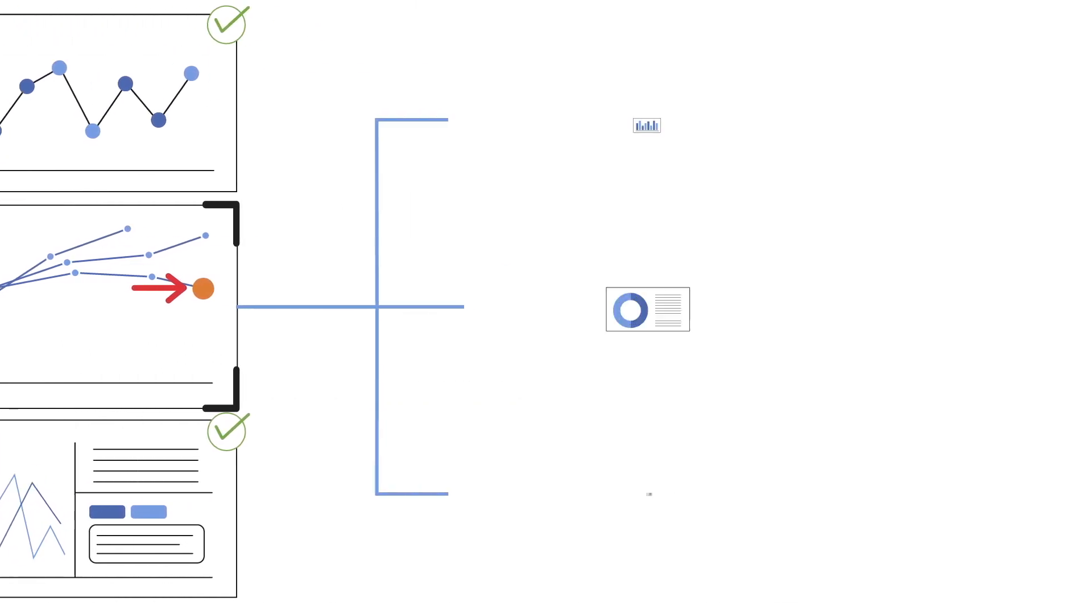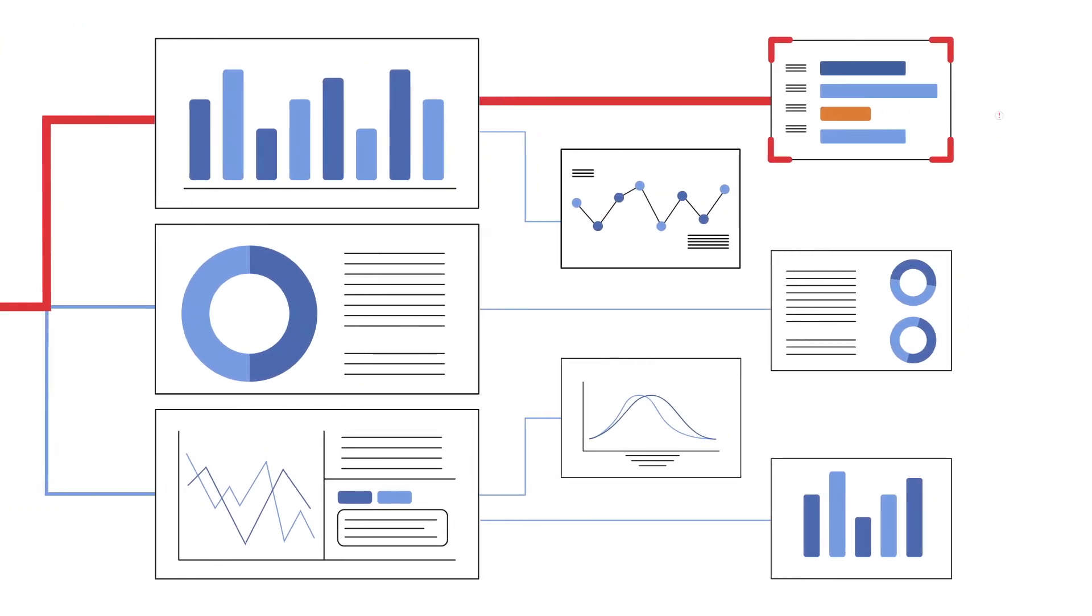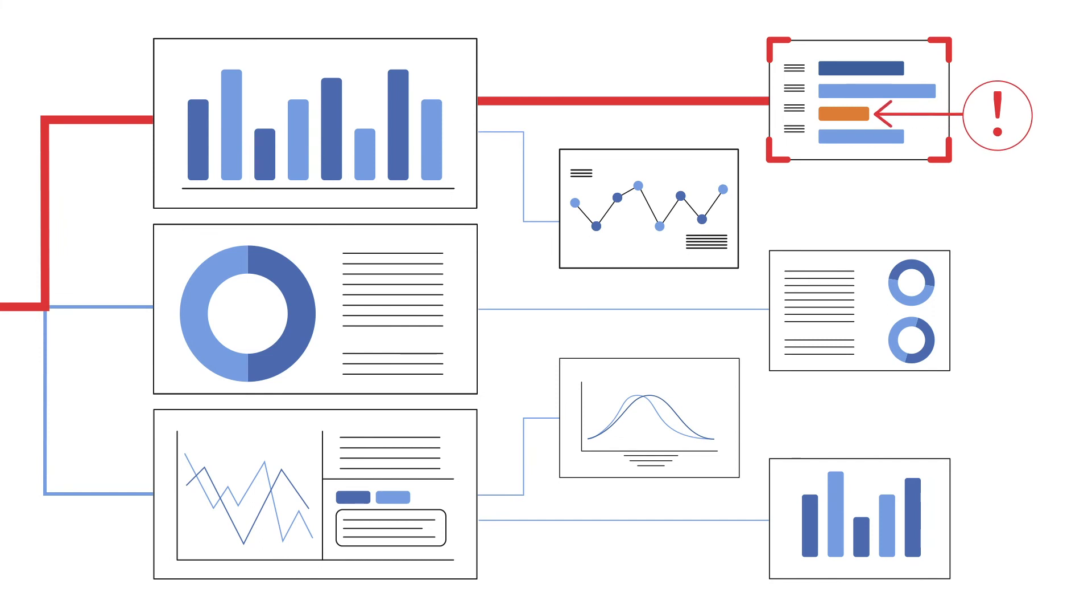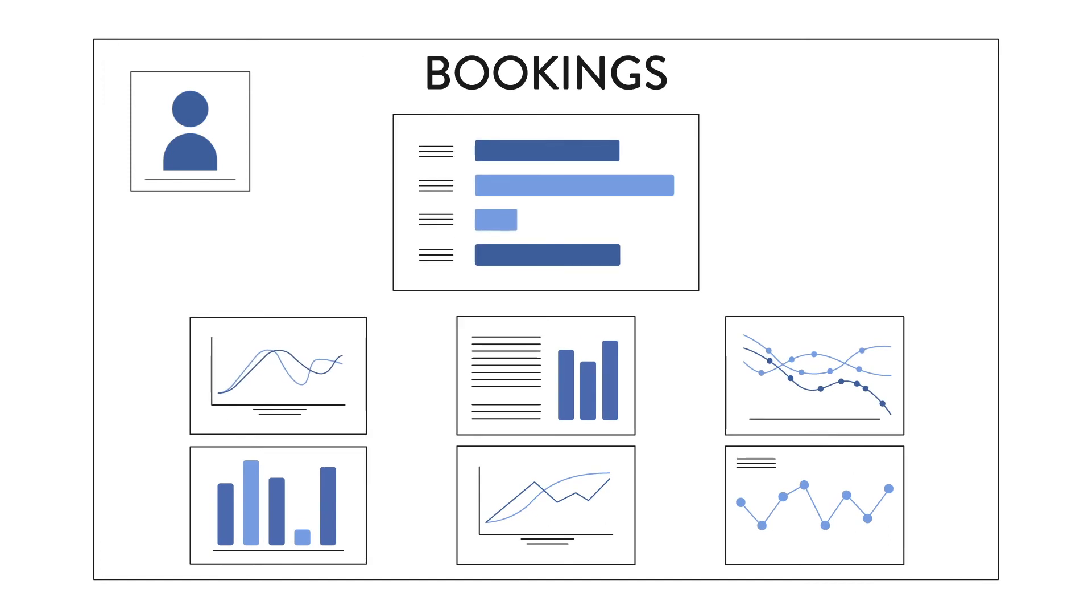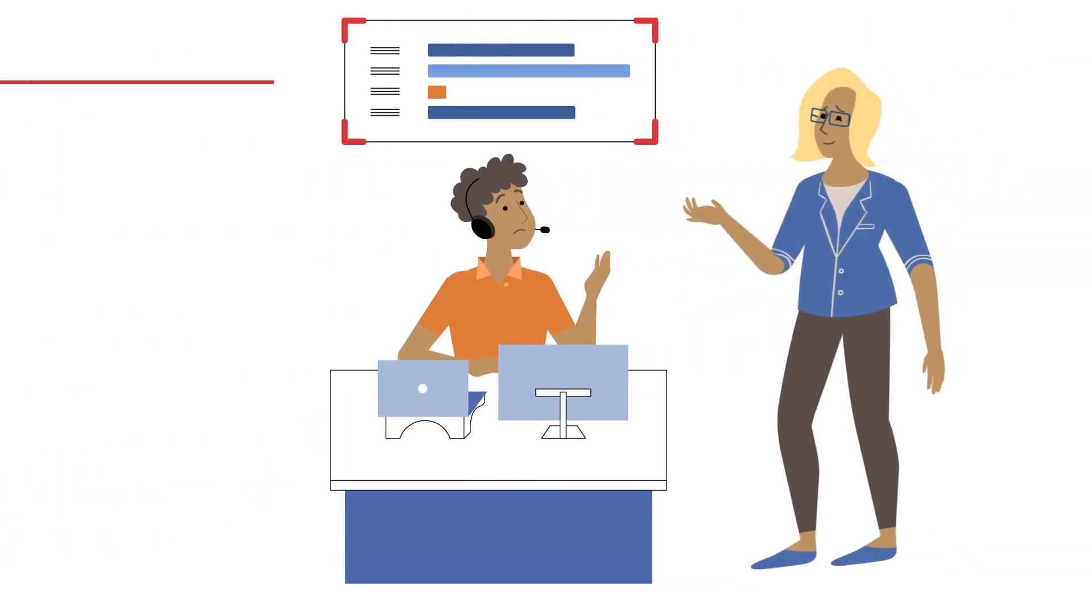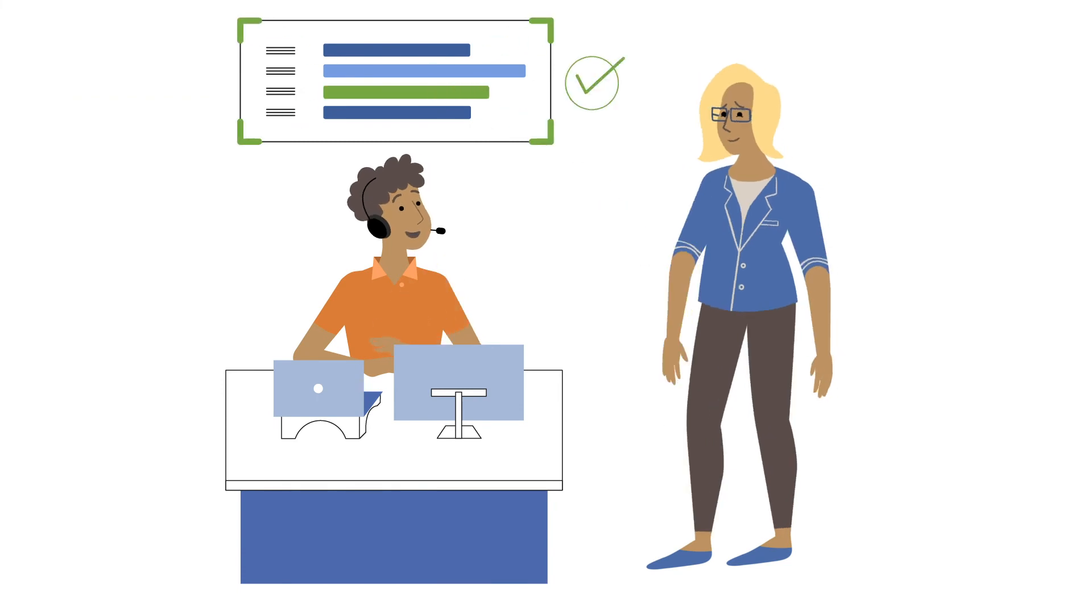Then, Atrium pinpoints the root cause of these issues by analyzing dozens of correlated metrics. For example, Atrium not only will tell you which rep will have a bookings issue, but exactly why. So now you know exactly what root cause to address to get that rep back on track.